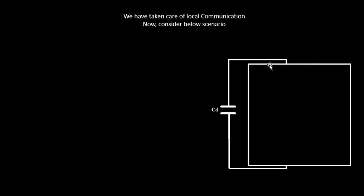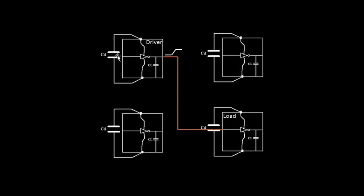Now the second problem statement: if this particular macro is being repeated multiple times on the chip, then there will be current demand for each and every element of this macro. For example, this was one of the macros for which the problem of current demand was solved using decoupling capacitors.